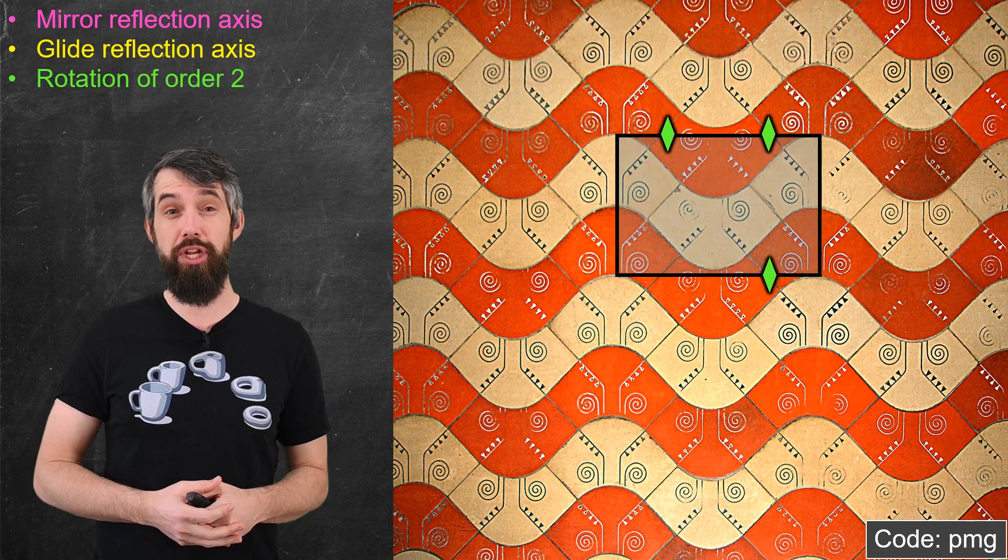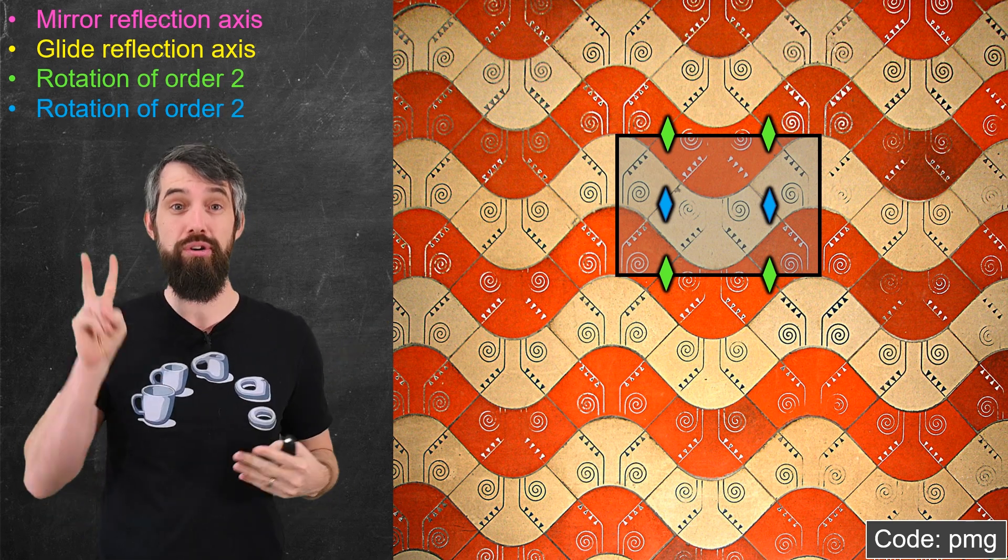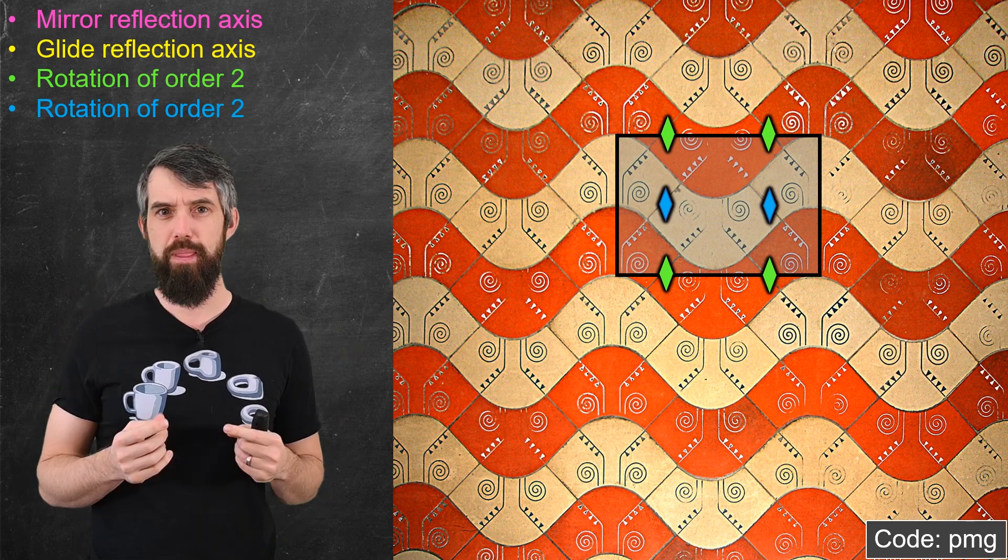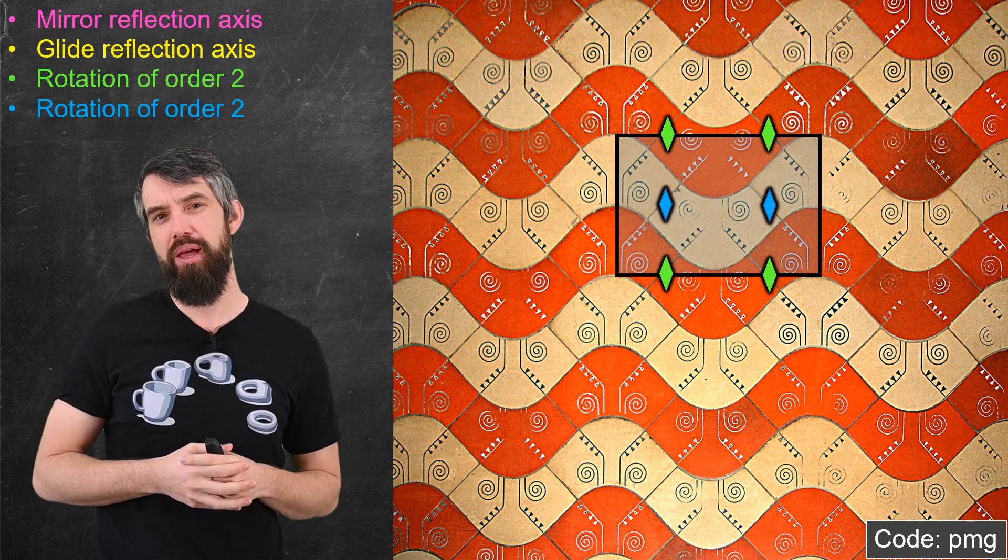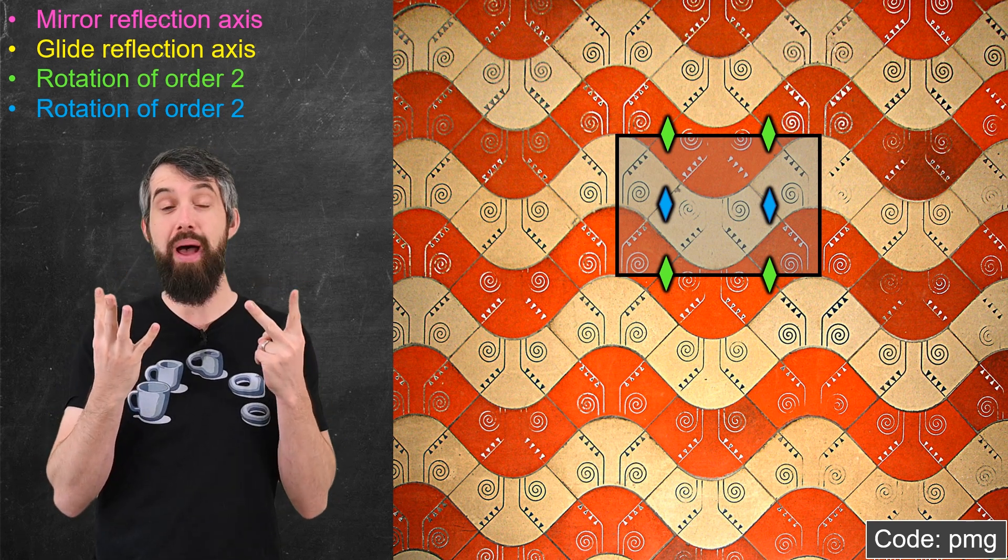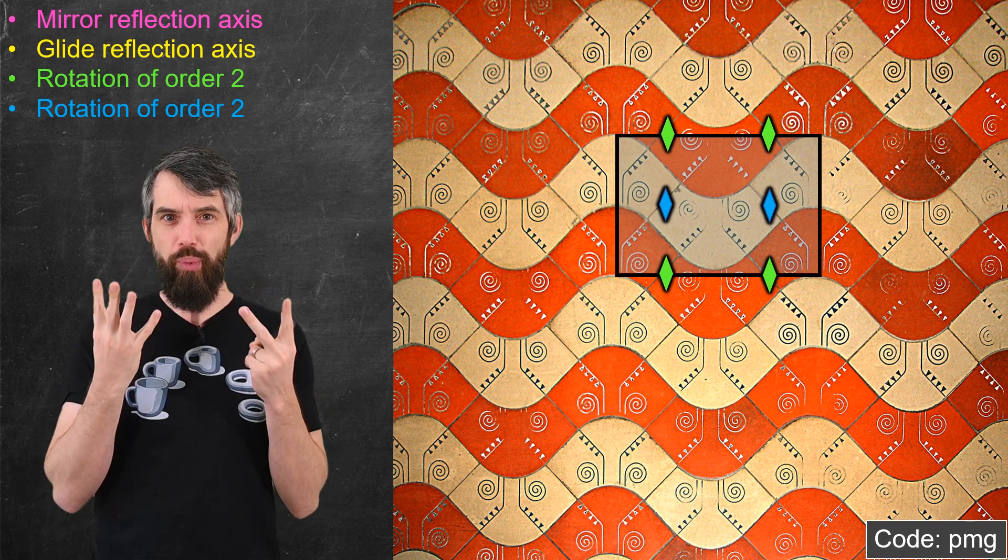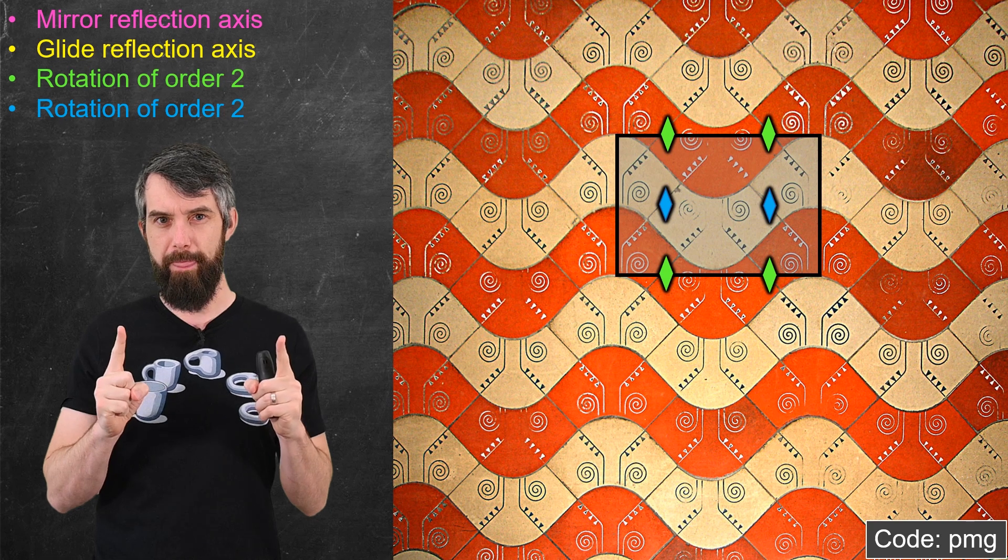But this is not the only rotation that it has. In fact, every single one of these other diamonds has order two rotational symmetry. You can sort of pause and try to imagine rotating those in your mind. However, a note that four of them I've colored green, and two of them I've colored blue. And really, of these six different rotation centers, I think that there's only really two of them. Let me show you what I mean.